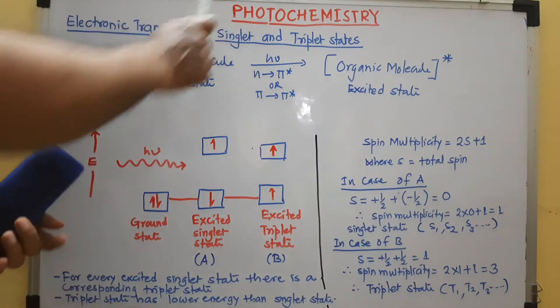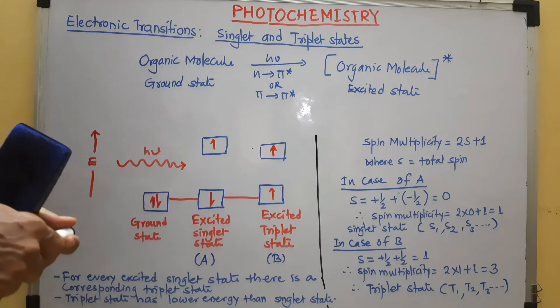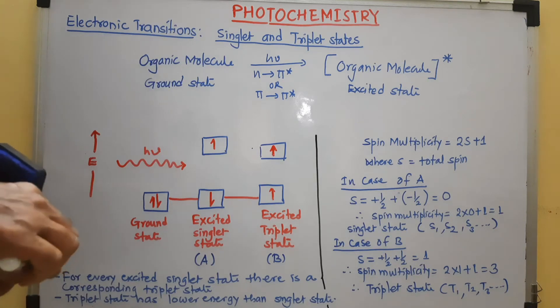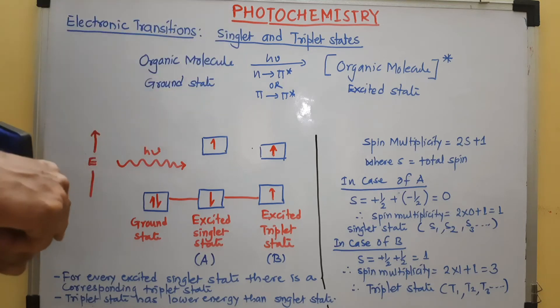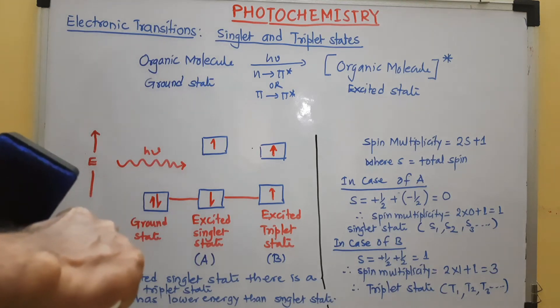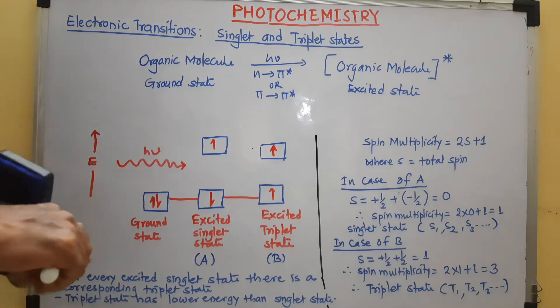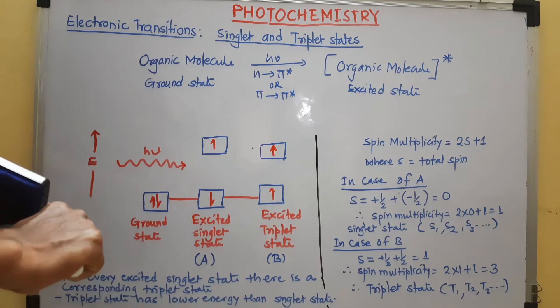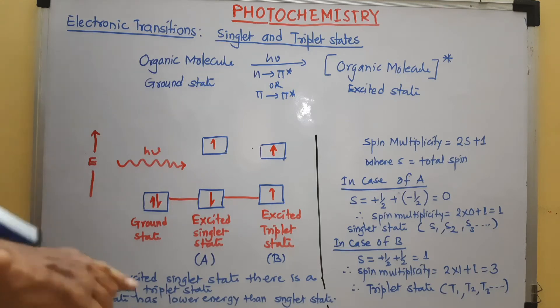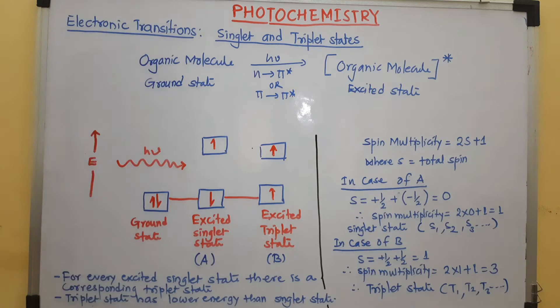We have seen under the heading of photochemistry the basic theory of photochemical processes. In that video, we have seen that the molecule is electronically excited and the electronically excited molecule may have two states: either singlet state or triplet state. So, that we are going to discuss in this video.